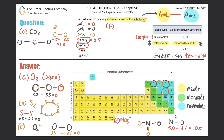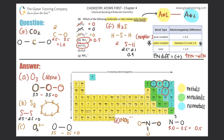Part F is H₂S. Hydrogen always goes on the outside, so sulfur must be in the middle surrounded by two hydrogens. There are two S–H bonds. Sulfur's electronegativity is 2.5 and hydrogen's is 2.1. Subtracting them gives 0.4, and technically 0.4 is between 0.4 and 1.8, so this is a polar covalent bond. F makes the cut.